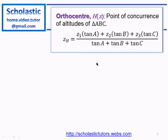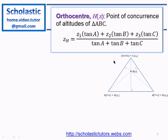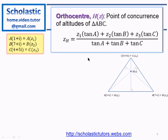The equation for orthocenter is given as z_H equal to z₁ times tan A plus z₂ times tan B plus z₃ times tan C, divided by tan A plus tan B plus tan C. z₁, z₂, z₃ are the vertices of the triangle. A, B, C are the angles. So we need to find z_H, but the angles are not given.